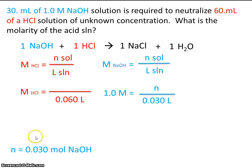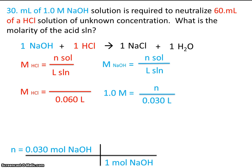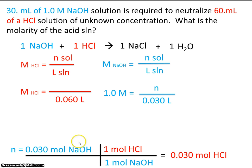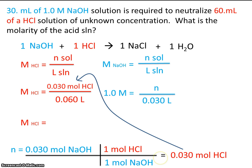So 0.030 moles is how much base reacted. If we know how much base reacted, we can use stoichiometry to figure out how much acid reacted. Now, this step seems simple, but it's important — these coefficients are 1 to 1. But if they're not 1 to 1, it's going to drastically change your answer. So if 0.03 moles of base reacted, that means 0.03 moles of acid also reacted. When we plug that in, we can solve for the molarity of the unknown acid solution: it's 0.50 molar HCl.